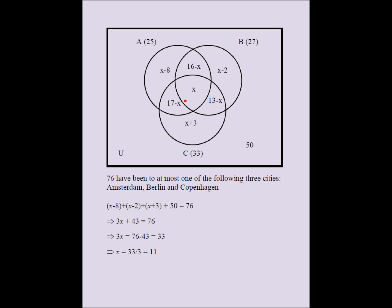Here is the algebra. We set (x minus 8) plus (x minus 2) plus (x plus 3) plus 50 equal to 76. Combining: 3x plus 43 equals 76, so 3x equals 33, giving x equals 11. Therefore: the center = 11, Amsterdam∩Berlin only = 5, Amsterdam∩Copenhagen only = 6, Berlin∩Copenhagen only = 2, Amsterdam-only = 3, Berlin-only = 9, Copenhagen-only = 14, outside = 50.